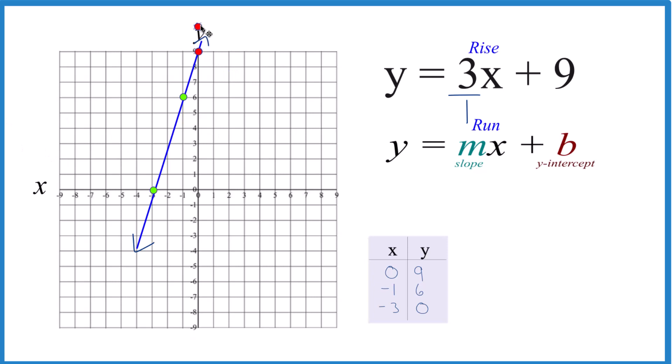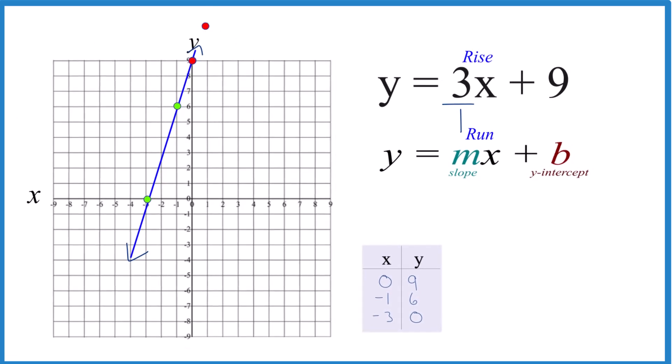Because we go 1, 2, 3, and over 1. You can see it would be over. So we're going to go in the opposite direction. We're going to go down 3, 1, 2, 3, and over 1 to the left.